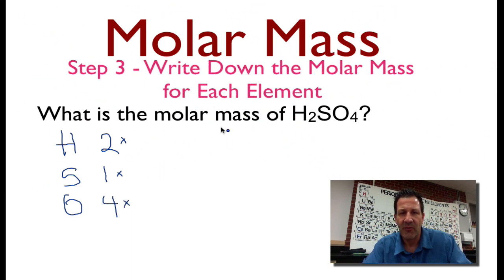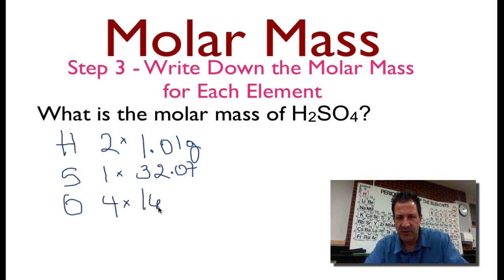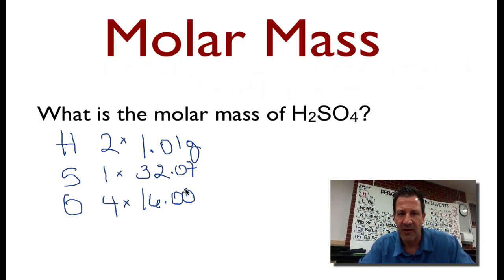Now for step three, I'm going to write down the molar masses. The molar mass of hydrogen is 1.01, I'm getting this right off of my periodic table. Grams, sulfur is 32.07 grams, and oxygen is 16.00 grams. Those are the molar masses right from the periodic table.